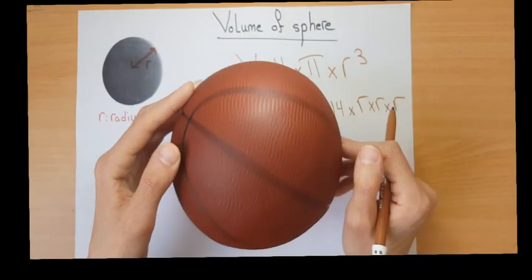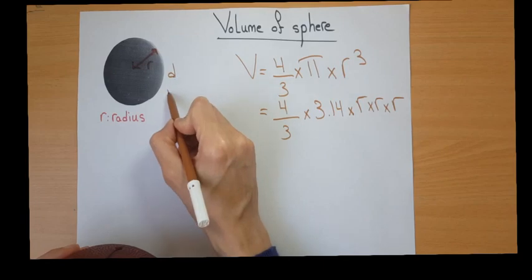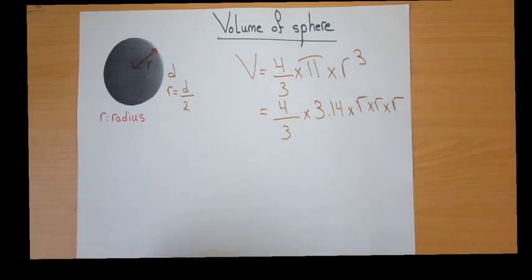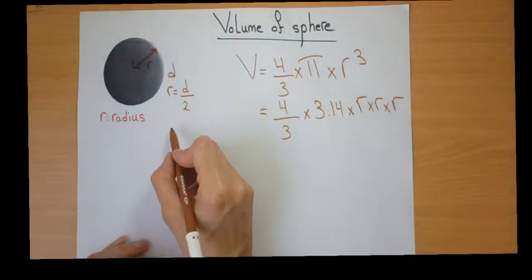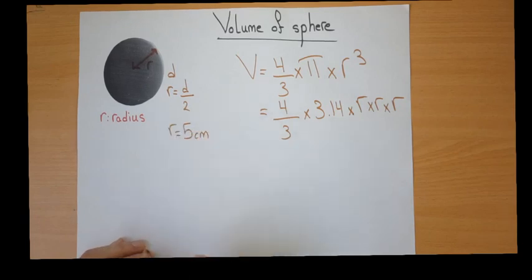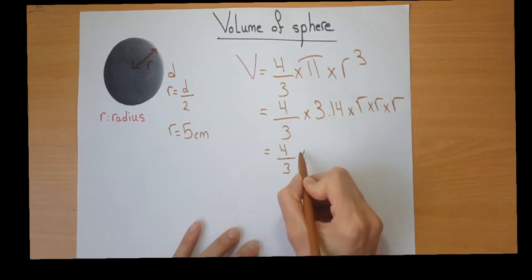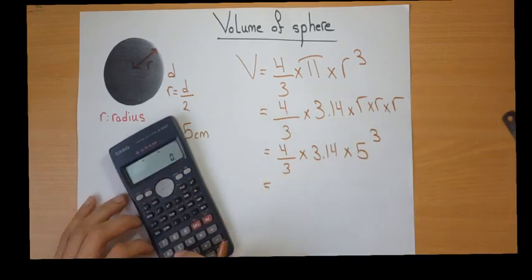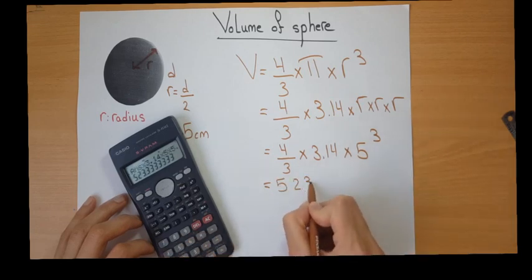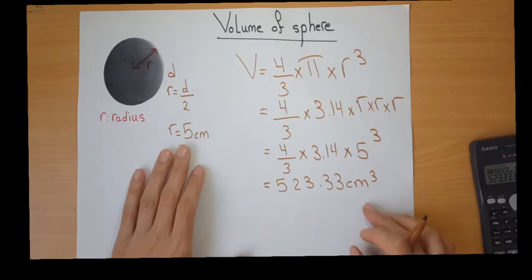For each sphere you are given its radius or its diameter. If you are given the diameter, you find the radius by dividing the diameter by 2. Let's assume the radius of this basketball is 5 centimeters. Then the volume is 4/3 times 3.14 times 5 cubed, which gives 523.33 centimeters cubed.